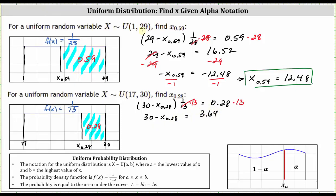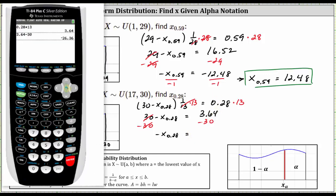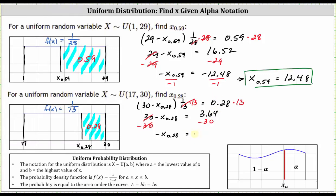Next, isolate X by subtracting 30 on both sides. Simplifying, we have negative X sub 0.28 equals 3.64 minus 30, which equals negative 26.36. The last step: multiply or divide both sides by negative one. Dividing by negative one changes the sign on both terms, giving us X sub 0.28 equals positive 26.36.